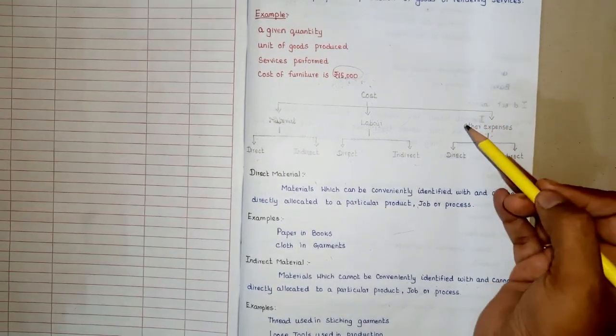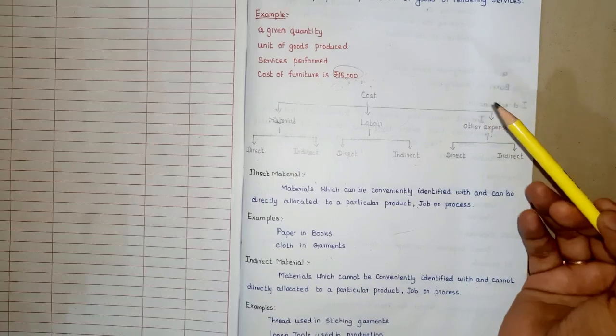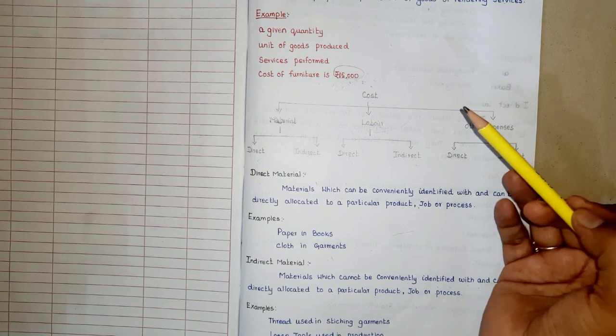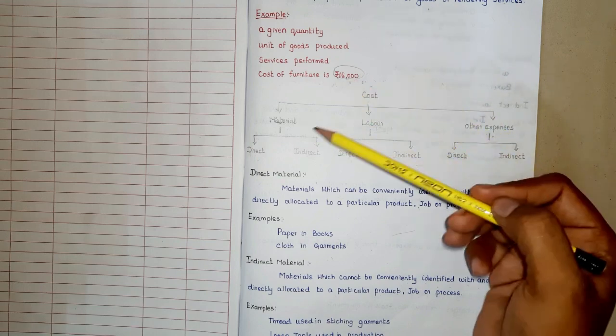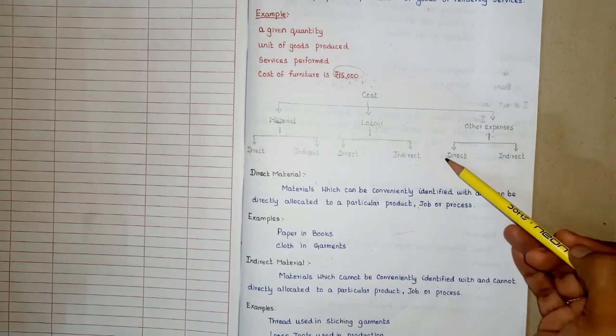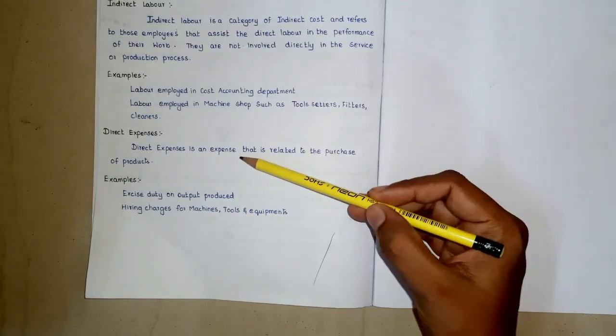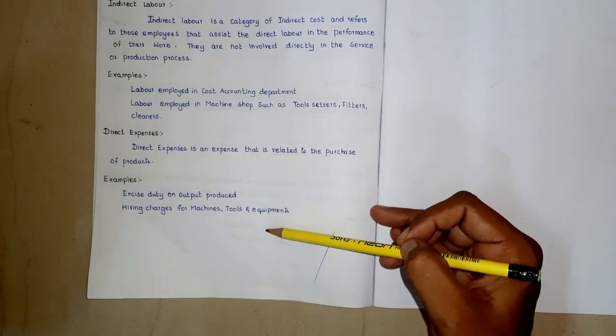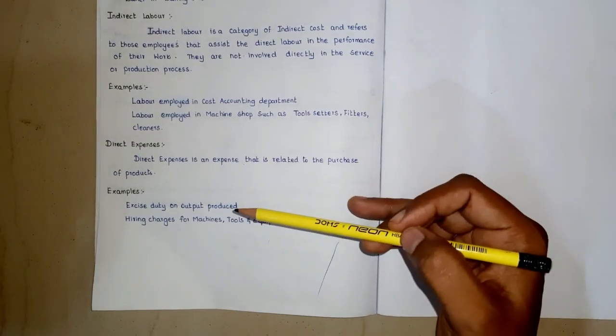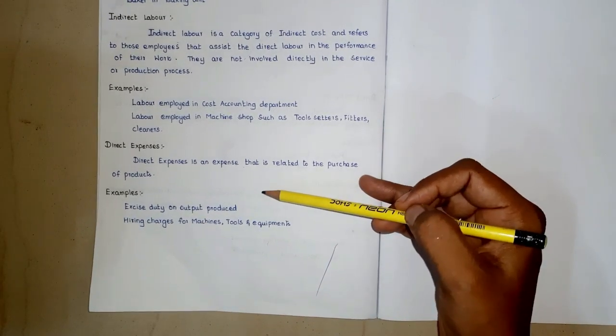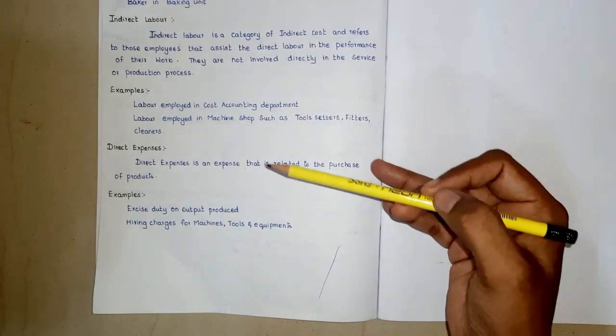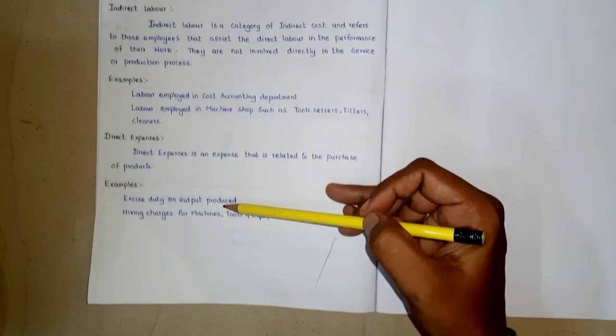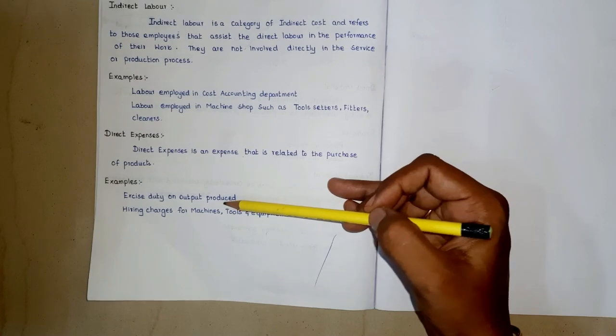Expenses refer to the cost incurred on something. When it comes to business, the incurrence of expense is a daily affair. These expenses may be related to production or regular business operations. When expenses are linked to the production of a product, it is considered as a direct expense. Expenses which are incurred to manufacture a product and bring them into a saleable condition are considered as direct expenses.